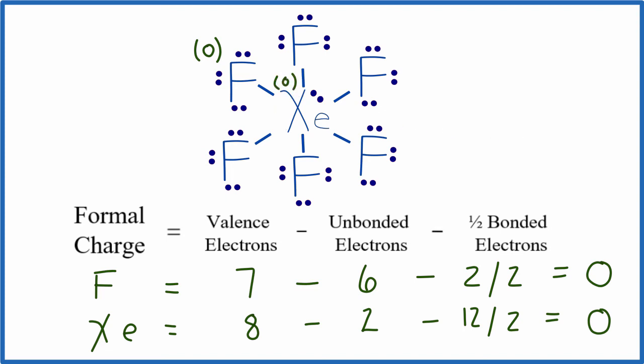When we look at formal charges, the best or most likely Lewis structure is the one that has formal charges closest to 0. In this case, with xenon hexafluoride, XeF6, every atom has a formal charge of 0. So that means this is the correct Lewis structure for XeF6.